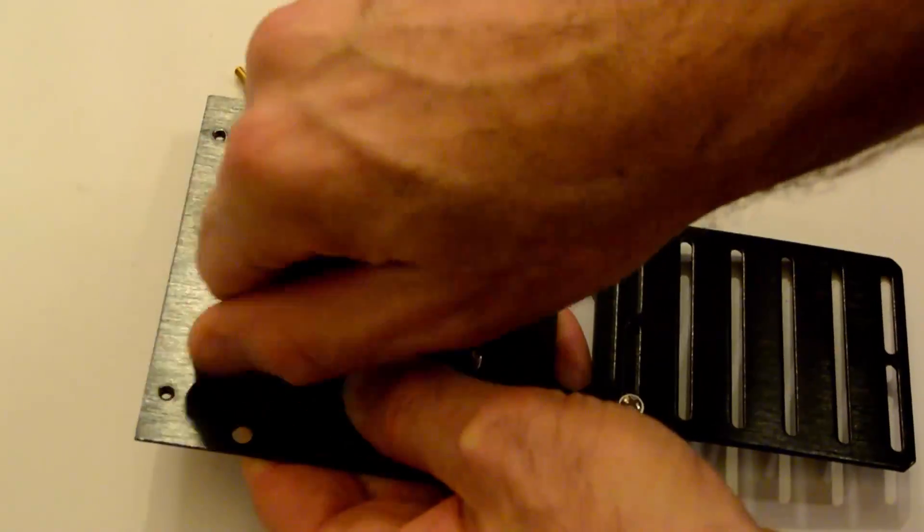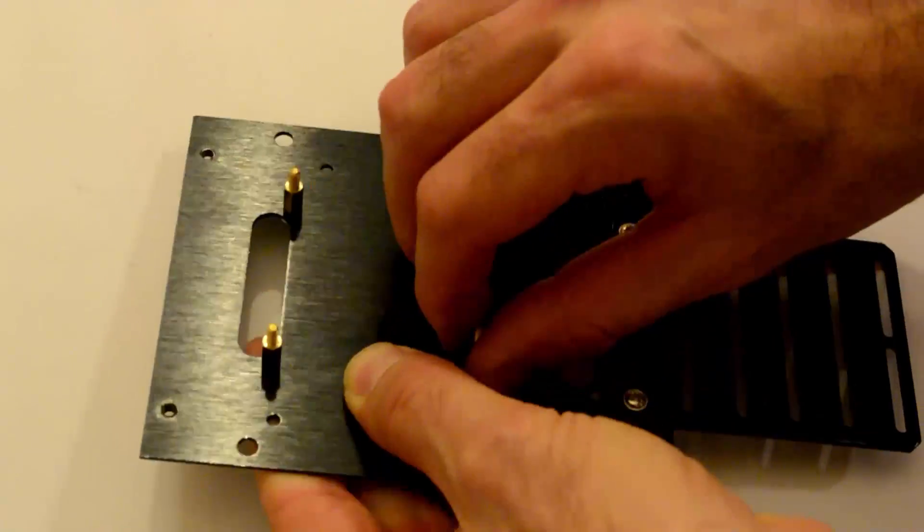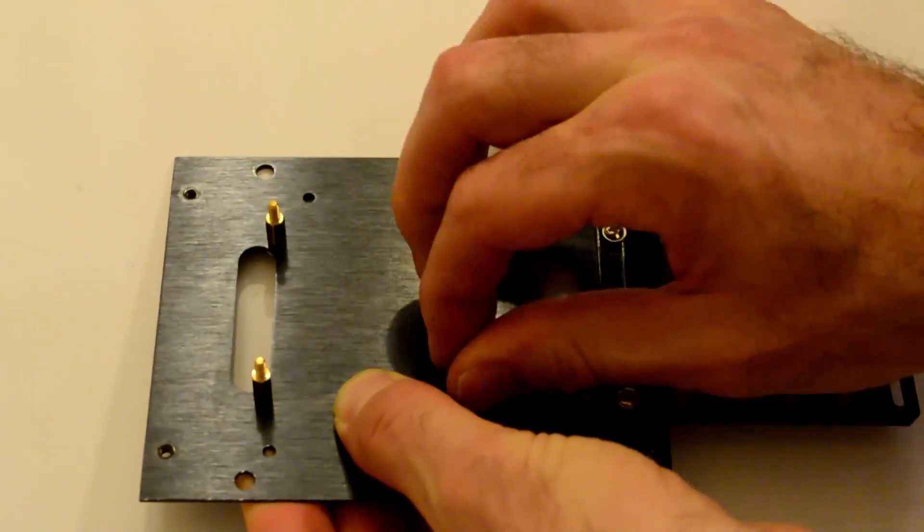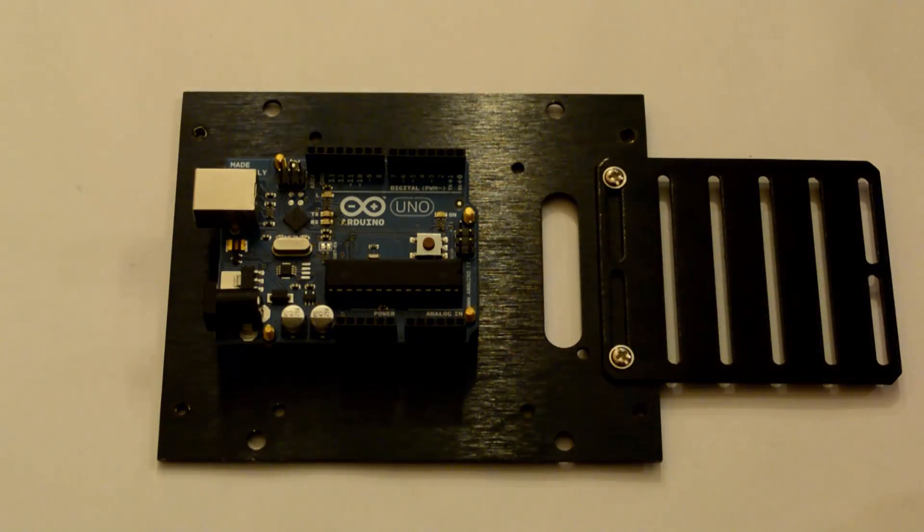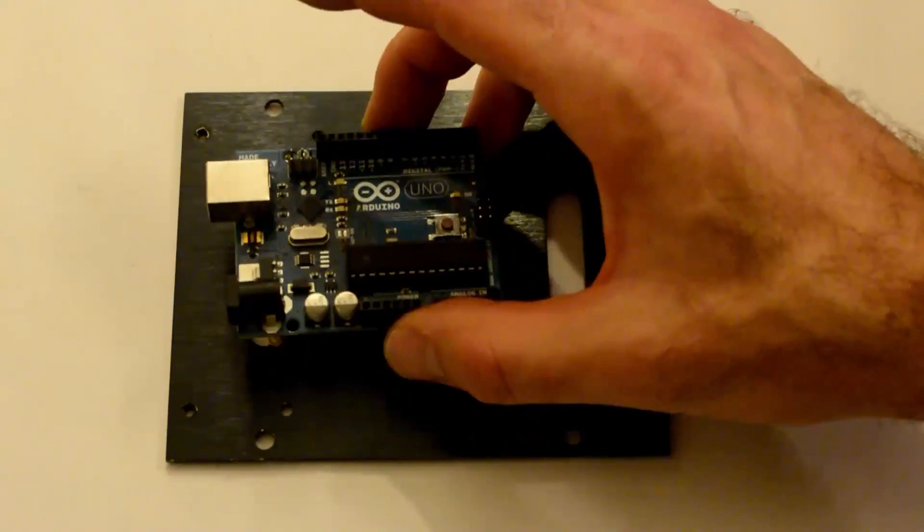The USB connector on the Arduino is going to be facing the same direction as the switch. So what you can do is use screws to screw through the bottom of the plate, and those are going to connect to each of the standoffs.